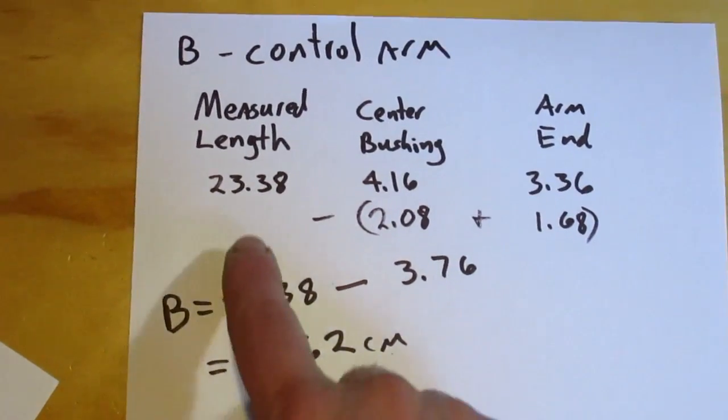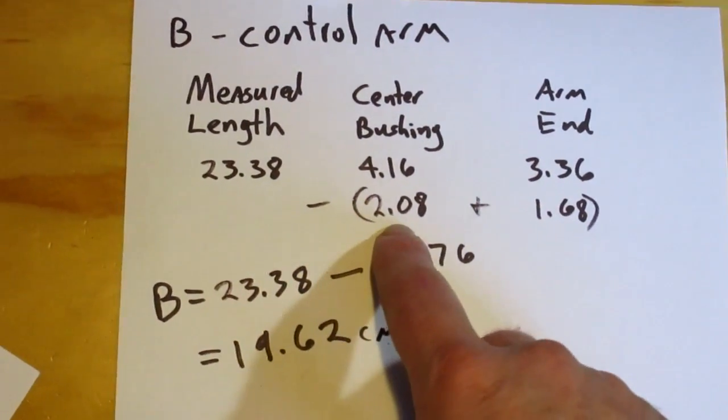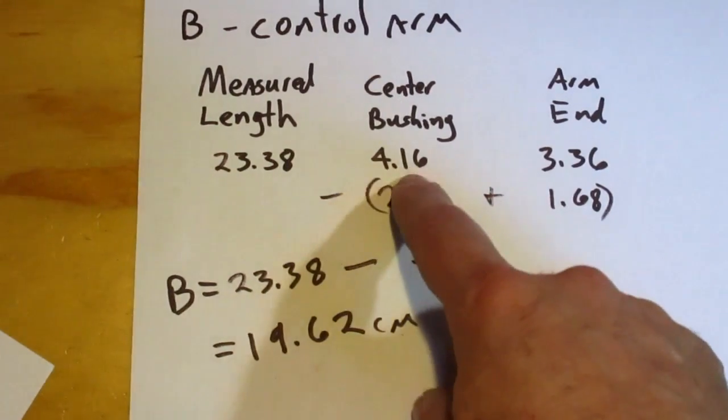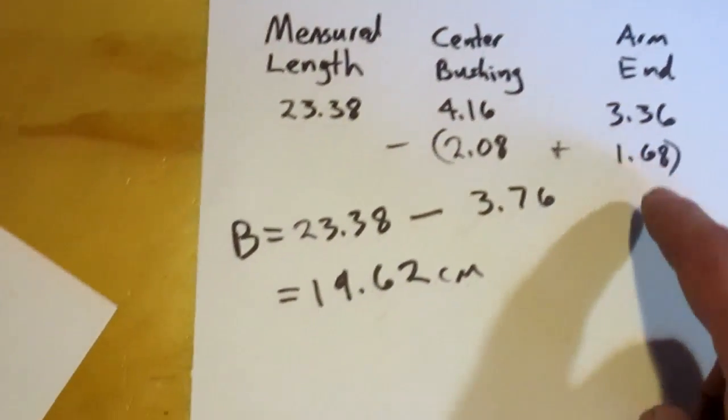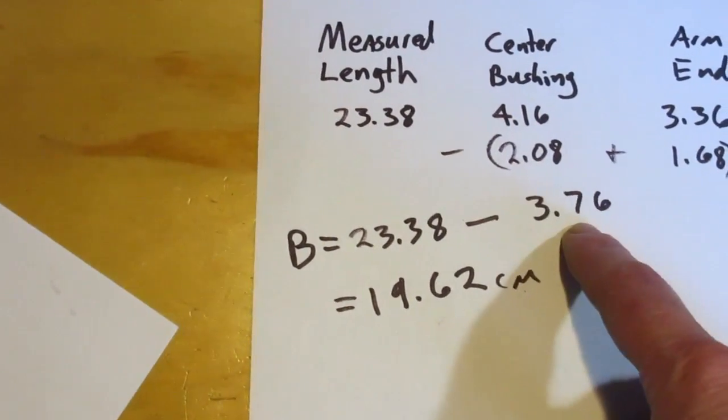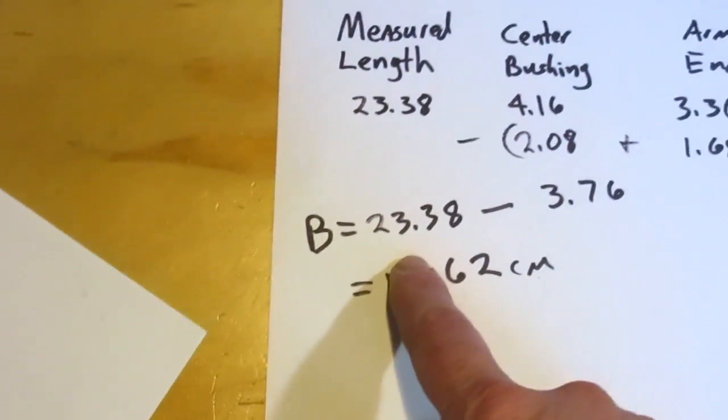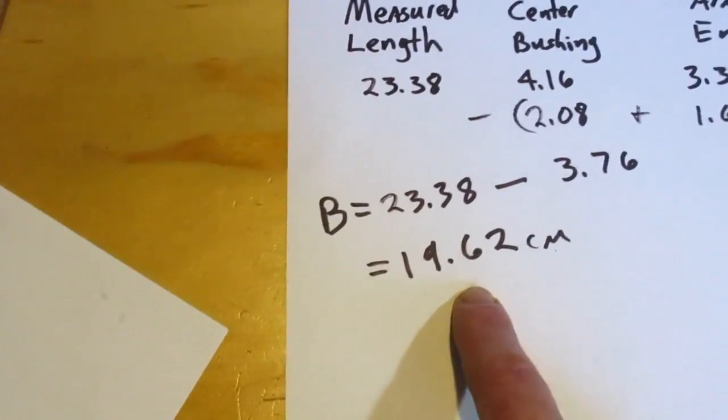So overall measured length, 23.38, the center bushing, 4.16, the arm end, 3.16. Divide by 2, add that together, 3.76, subtracted from the 23.38, leaves us with 19.62 centimeters.